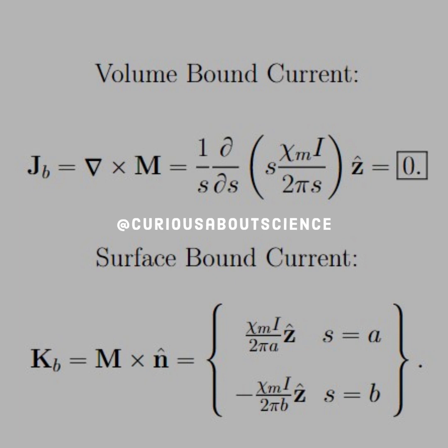Now, of course, the surface-bound current is very different. That is M cross the normal direction, which is going to be in the phi hat. So that leads to the z hat with the right-hand rule.